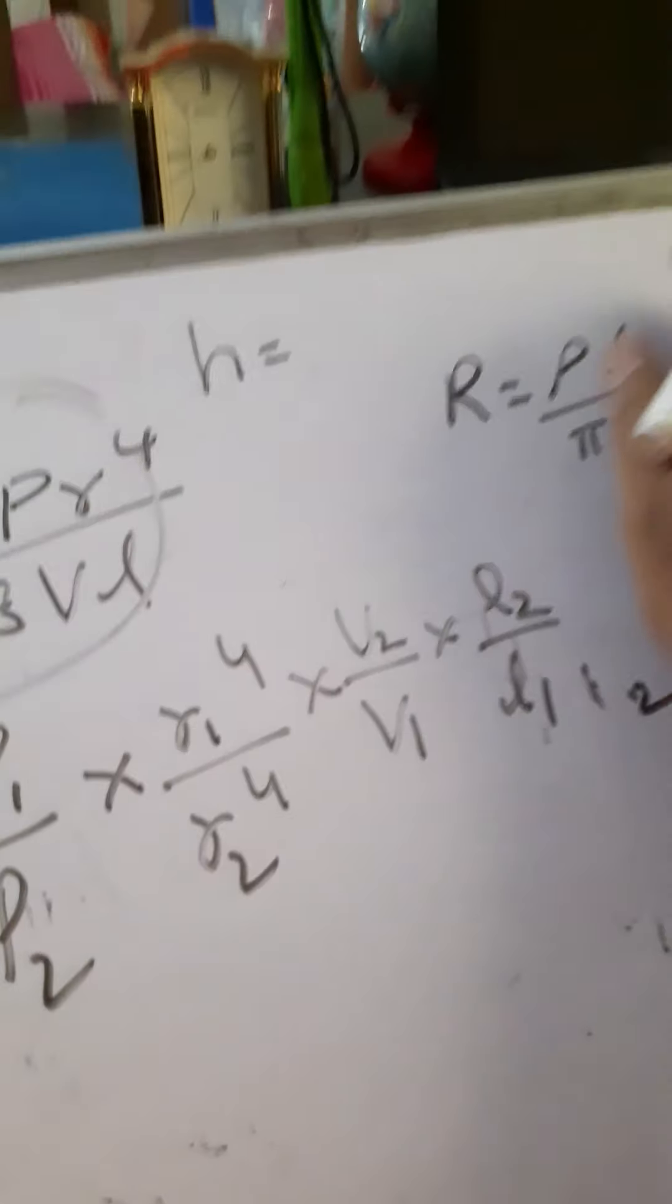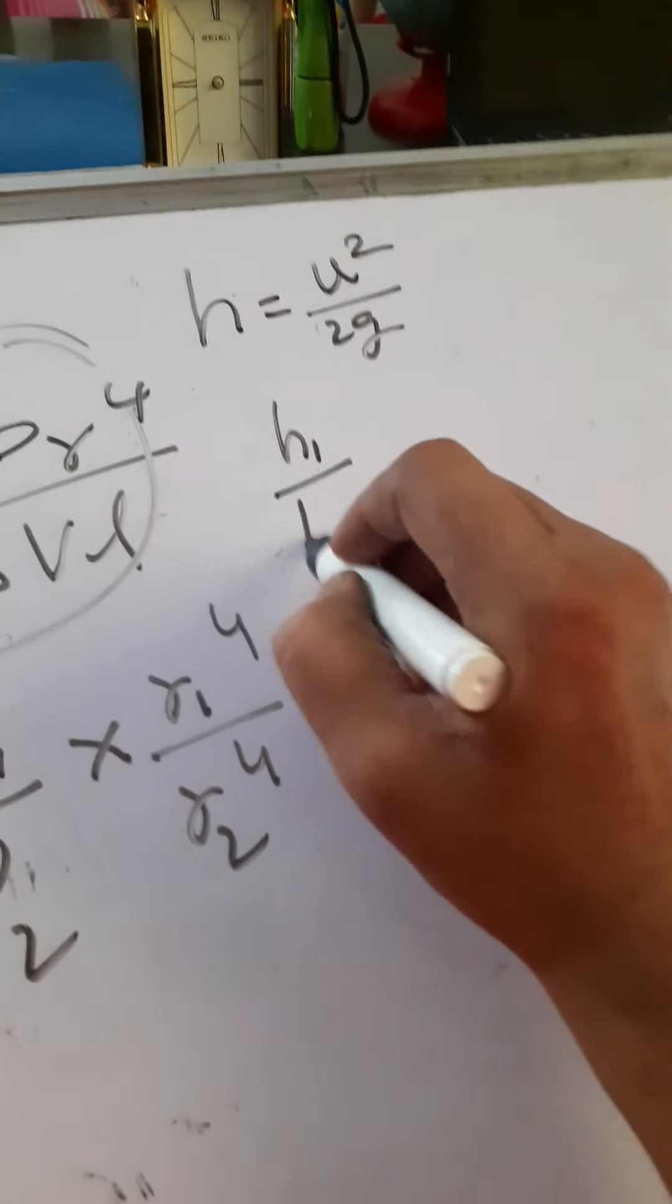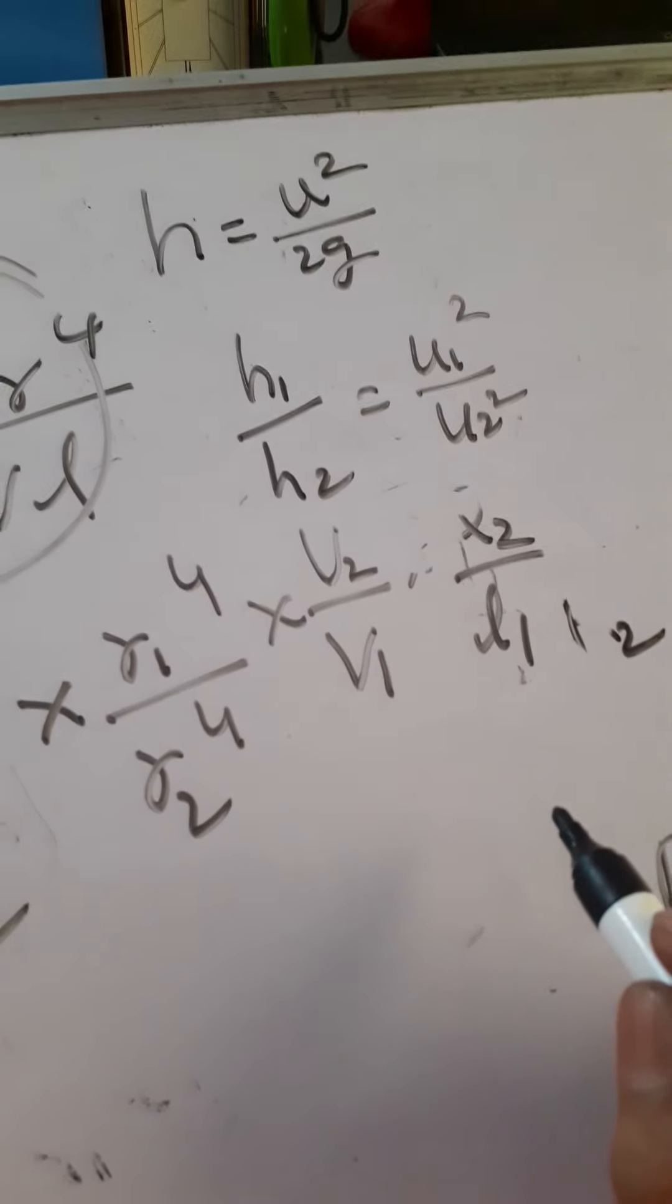For example, Height of Ascent: U square by 2G. Then H1 by H2 equals U1 square by U2 square, because G is a constant.